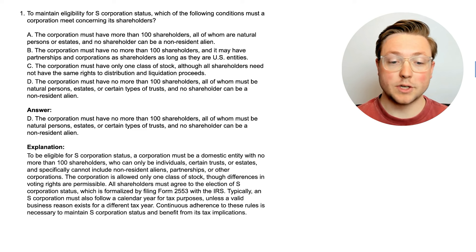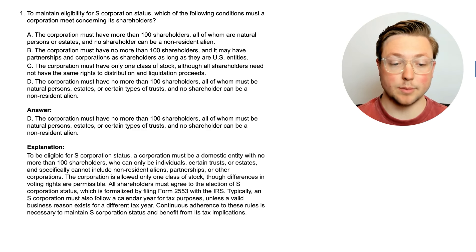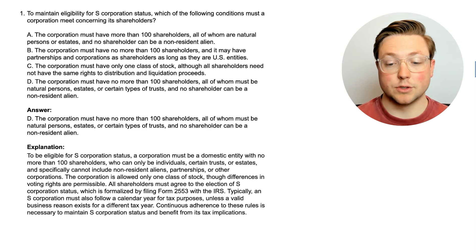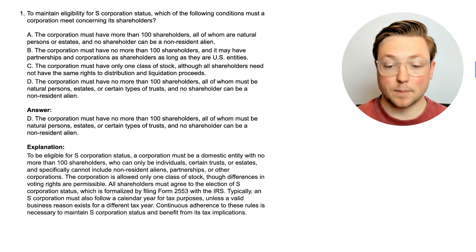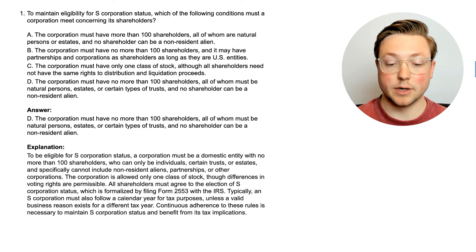The answer is D. The corporation must have no more than 100 shareholders, all of whom must be natural persons, estates, or certain types of trusts, and no shareholder can be a non-resident alien. To be eligible for S-corporation status, a corporation must be a domestic entity with no more than 100 shareholders, who can only be individuals, certain trusts, or estates, and specifically cannot include non-resident aliens, partnerships, or other corporations. The corporation is allowed only one class of stock, though differences in voting rights are permissible. All shareholders must agree to the election of S-corporation status, which is formalized by filing Form 2553 with the IRS. Typically, an S-corporation must also follow a calendar year for tax purposes, unless a valid business reason exists for a different tax year.